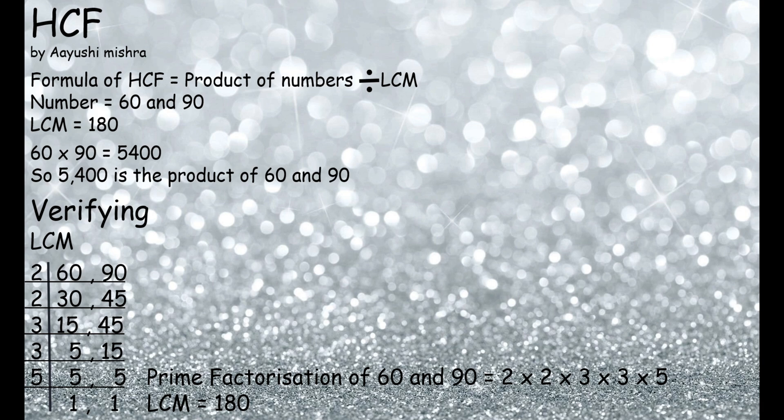Finding the HCF of a number: the formula to find the HCF of a number is that we have to divide the product of the numbers by the LCM. Here the numbers are 60 and 90, and the LCM is 180.